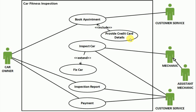The use case 'provide credit card details' is included in 'book appointment.' When we say include, we mean this must be a sub-process of that process — in other words, without providing credit card details, the booking cannot proceed. So it must be included as part of booking, but it can be treated as a separate collection of steps, which is why we put it in a different use case.